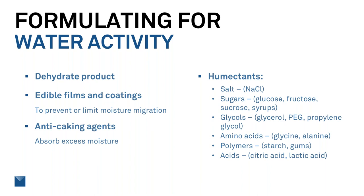One of the most useful ways to lower water activity is adding a humectant, which can be added singularly or in combination for additive effects. Salt is a very effective humectant — it lowers water activity but also increases overall moisture content by chemically binding water. Sugars are also very effective. Glycols like propylene glycol are good humectants. Amino acids and polymers — like starches — have some humectant properties, though they're less effective because their long chains wrap around each other and hide their water-binding sites.